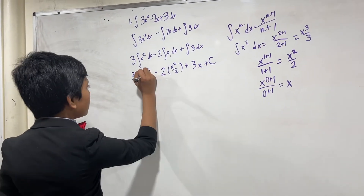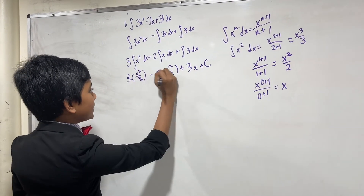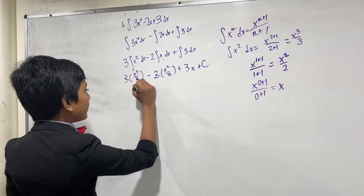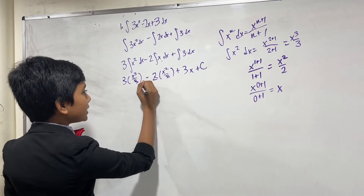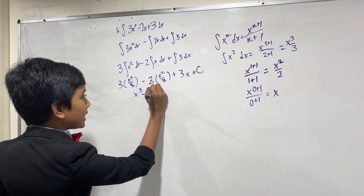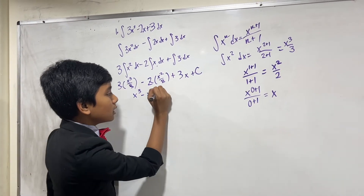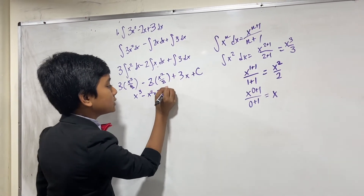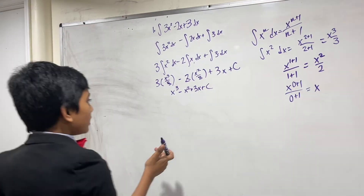Now, if we simply cancel out everything and reduce everything, there's our answer: x cubed minus x squared plus 3x plus C.